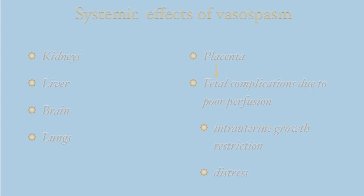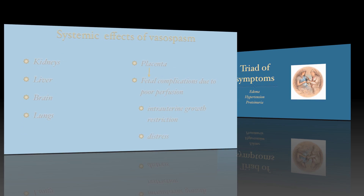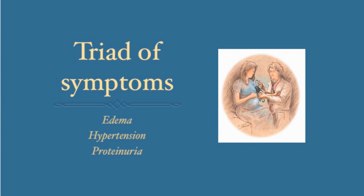IUGR develops over time. In a normal pregnancy on ultrasound, we expect to see symmetric fetal growth as measured by femur length, the size of the abdomen, and the head. With IUGR, growth slows, initially affecting the abdomen and extremities and eventually the head — this is known as asymmetric IUGR. The hallmark symptoms of PIH are edema, hypertension, and proteinuria.